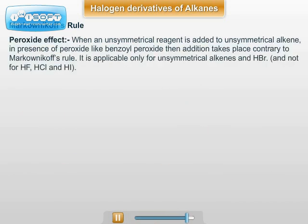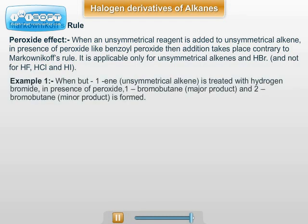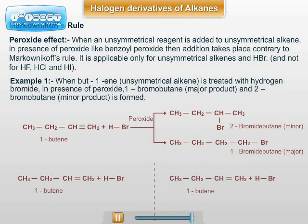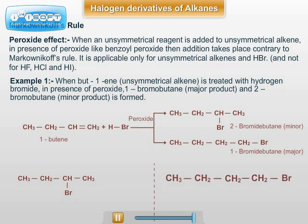In the preparation of alkyl halides using an unsymmetrical alkene and unsymmetrical reagent, if the reaction is carried out in the presence of peroxide, then the addition takes place exactly opposite to Markovnikov's rule. This is known as the Kharasch effect (peroxide effect). For example, but-1-ene reacts with HBr in the presence of peroxide; then 1-bromobutane is formed as the major product and 2-bromobutane as the minor product.